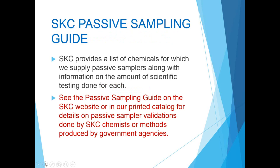SKC has a list of chemicals in our catalog and on our website for which we offer passive samplers. This list includes the sampling or uptake rates along with the amount of scientific testing that has been done to verify the sampling rates and other parameters. See the passive sampling guide on the SKC website or in our printed catalogs for details on the validations done by SKC or methods produced by government agencies.